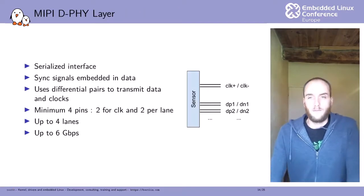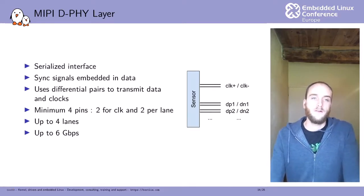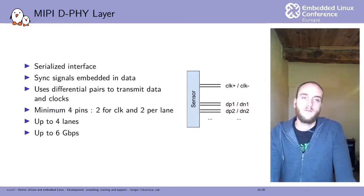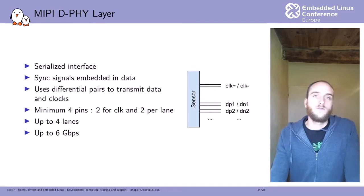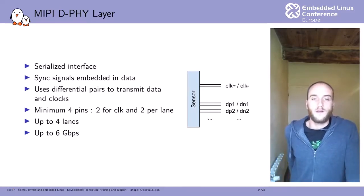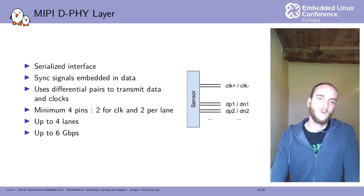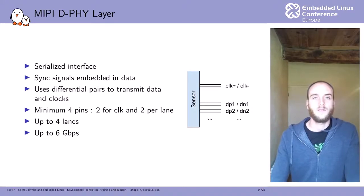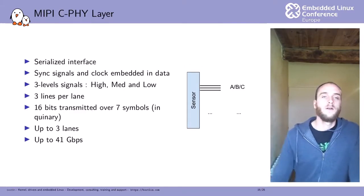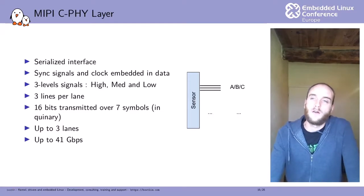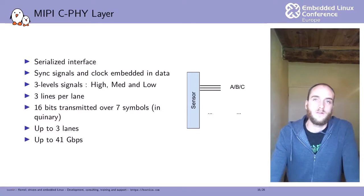There are several PHY layer variants. The D-PHY layer, found in most cases, is similar to CCP2 — a serialized interface with synchronization embedded in the data. The main difference is that it supports multiple data lanes to transmit data in parallel, up to four lanes, going up to 6 gigabits per second, making it a very fast interface.